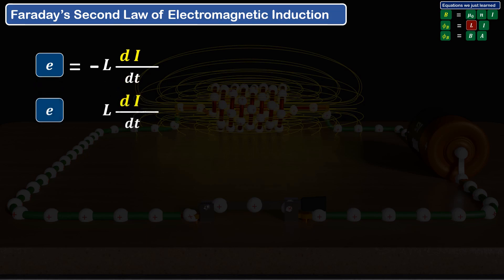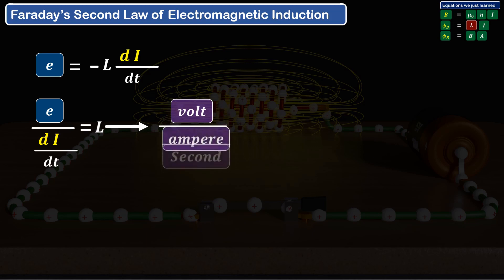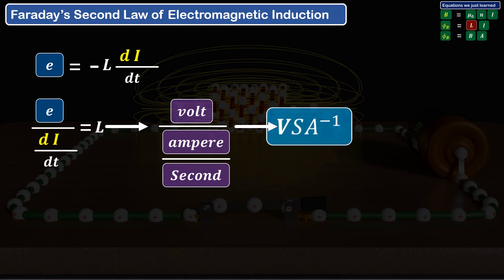From this equation, we can find the unit of inductance capital L. Inductance capital L is equal to EMF E over the rate of change of current di by dt, where the unit of EMF is volt and the current change rate is ampere per second, which can be written as V·s·A inverse. This unit is tricky to remember, therefore the unit of inductance is named after Joseph Henry, an American scientist who was one of the first to experiment with electromagnetism. This unit of volt-second-ampere-inverse is also termed as Henry.